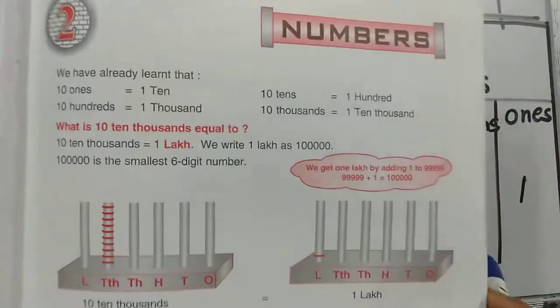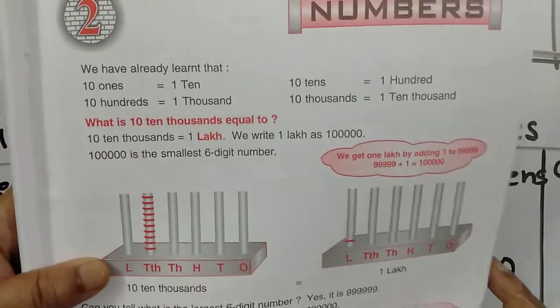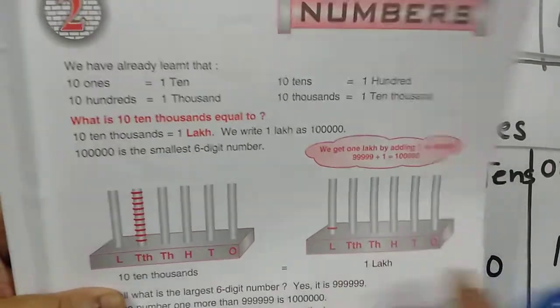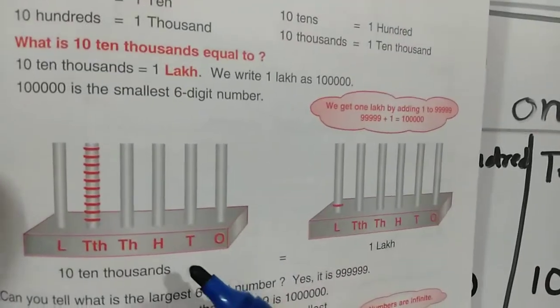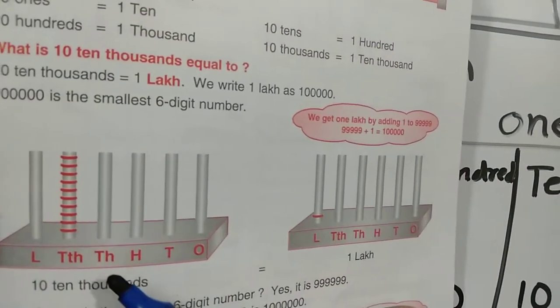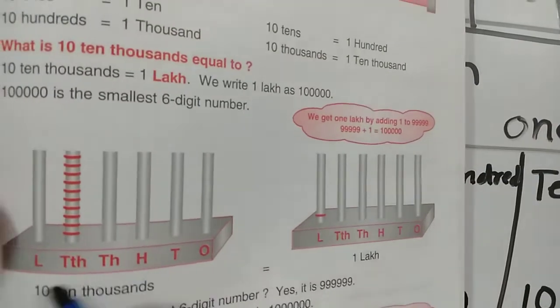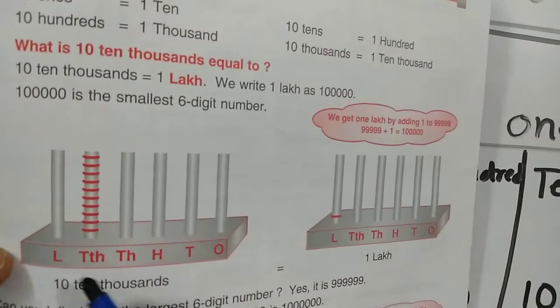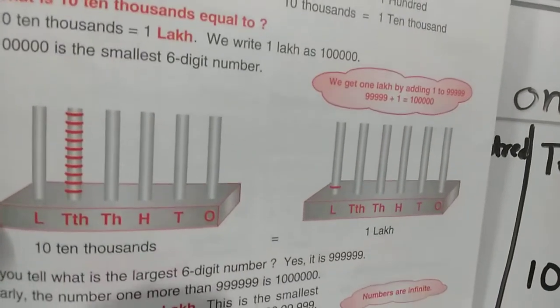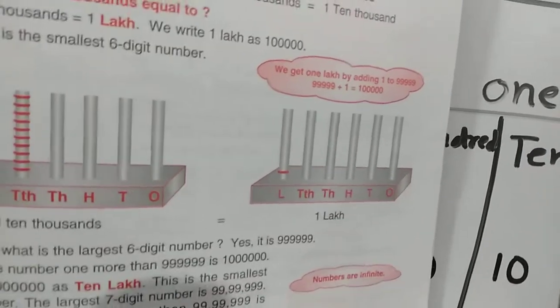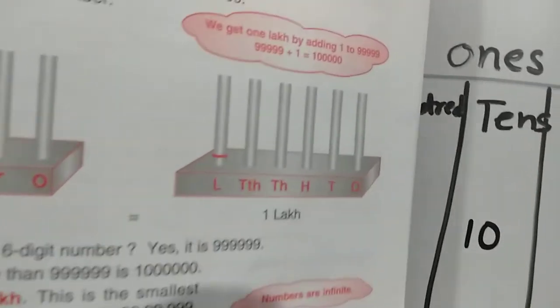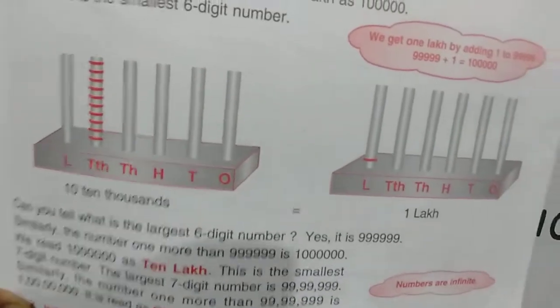Before Numbers, let's deal with a very important thing we already know: there are different place values — ones, ten, hundred, thousand, ten thousand, lakh. But in the number system, there are different systems also. One system is called the Indian number system, and another is called the international number system. So first, let's study what is the Indian number system and what is the international number system.